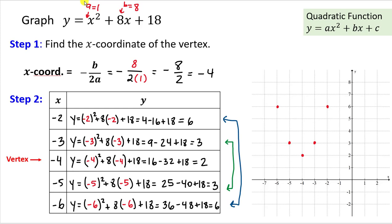Before connecting the points, we confirm the direction: a parabola opens up if a is positive and opens down if a is negative. Since a = 1 (positive), the parabola should open upward — which is consistent with our plotted points. We can now connect them to complete the sketch, illustrating how to graph a parabola by finding and plotting five special points: the vertex and two points on each side.